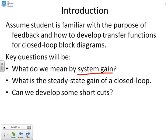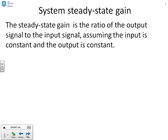What do we mean by system gain? How do we find the steady state gain of a closed loop? And perhaps later on, we will develop some shortcuts.